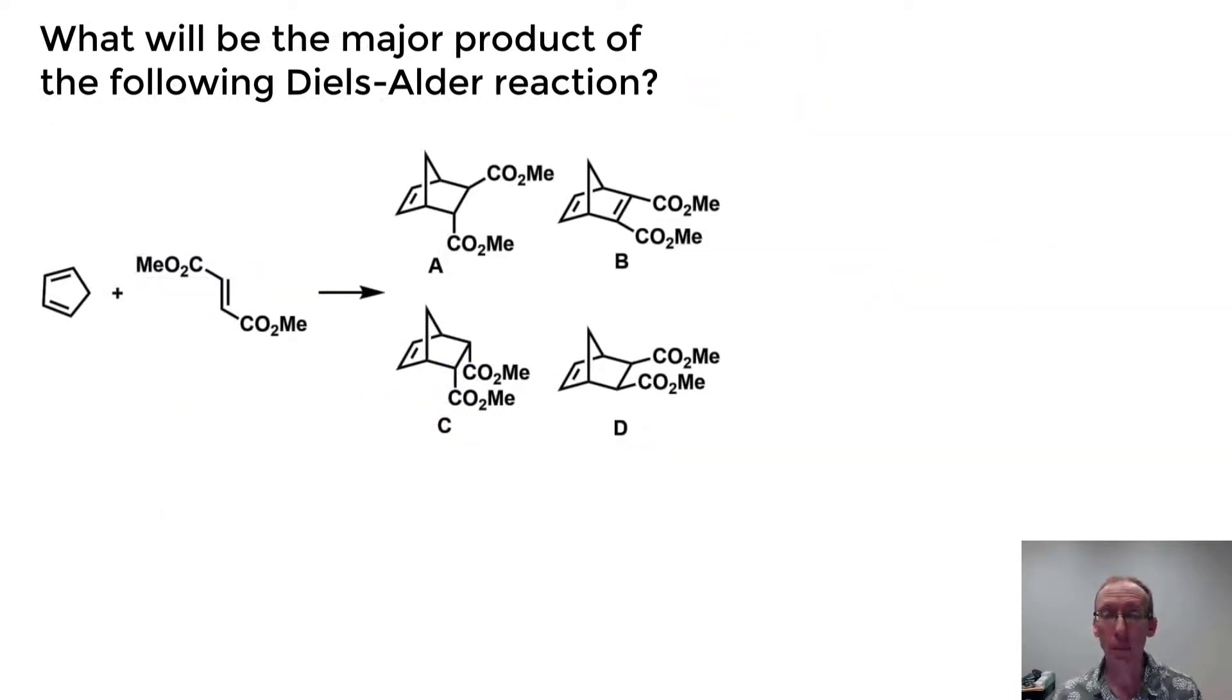Okay, so question number three. Which will be the major product from the following Diels-Alder reaction? In this case, it's important to recognize that B has a double bond where there shouldn't be a double bond. So we can immediately rule that one out.